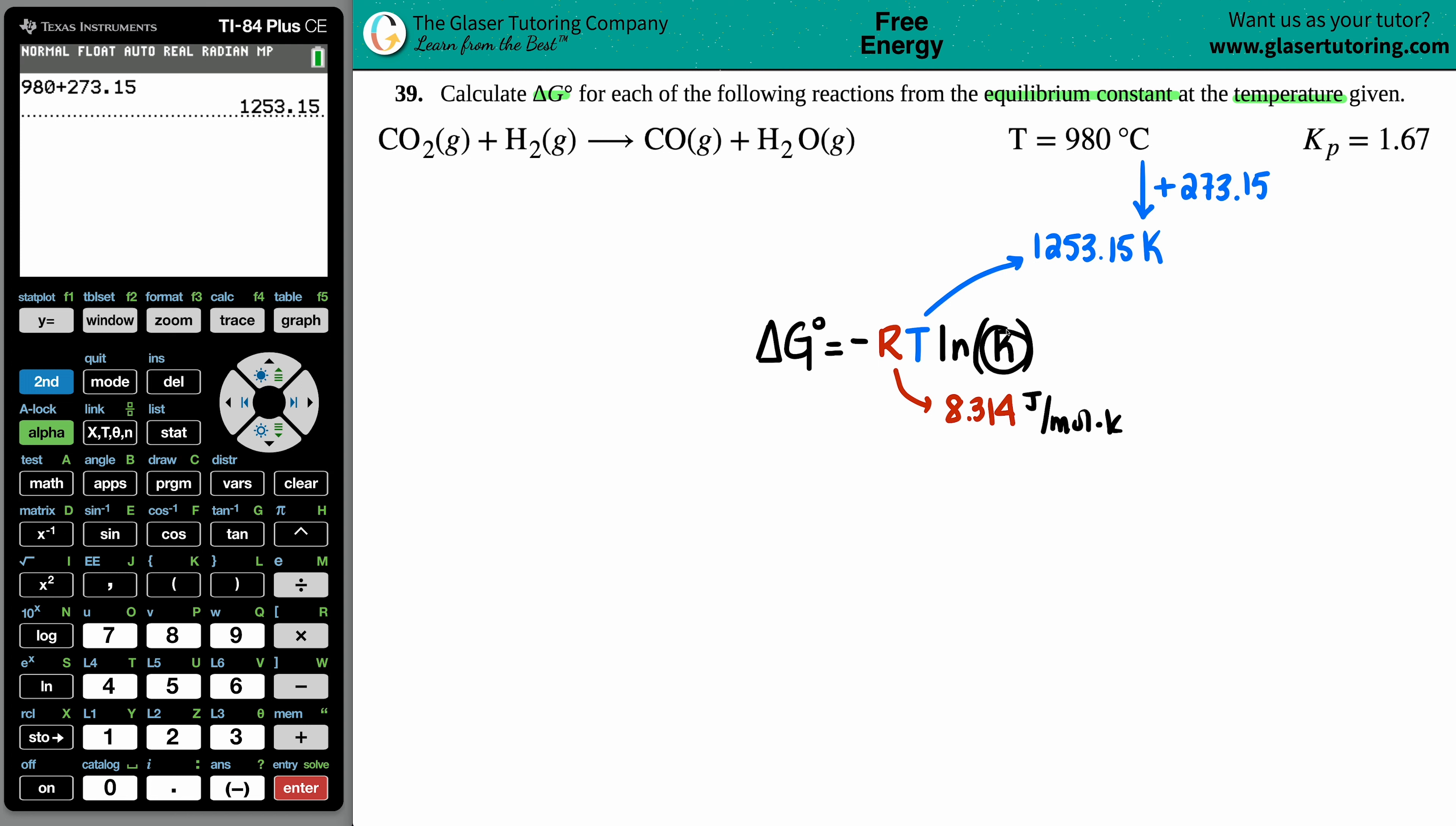Equilibrium constant - I just wrote K here. In this case they gave us the pressure equilibrium constant, but there's so many: Kp, Kc, Ka, Kb, Ksp. It does not matter what K you're using, just has to be an equilibrium constant. They gave us Kp = 1.67.